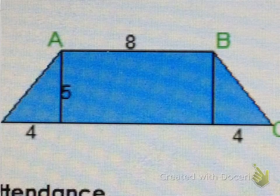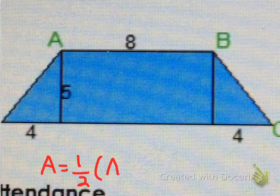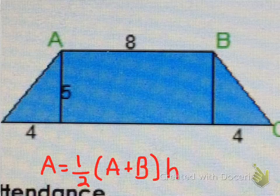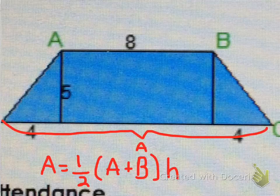First of all, if we're going to find the area of a trapezoid, we're going to start with the formula. Area equals one-half times A plus B times H. Okay, so A - figure out A, let's put it here - it should be this side.